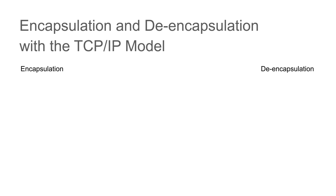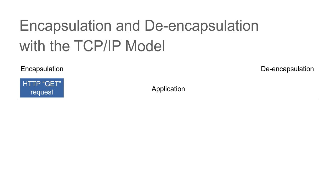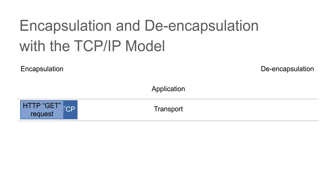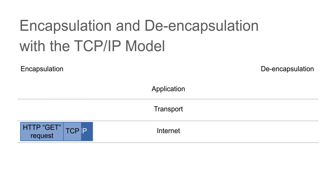Within the TCP/IP model, we still have encapsulation and de-encapsulation. Imagine sending a request from your web browser to a web server — you send an HTTP GET request. HTTP is an application layer protocol, handled in the top layer of the TCP/IP stack. That HTTP GET request is encapsulated inside a TCP header. TCP operates at the transport layer and provides reliable connectivity. It then receives a service from the internet layer — logical addressing and path determination — so an IP header is added.